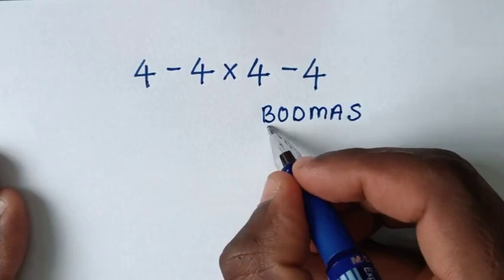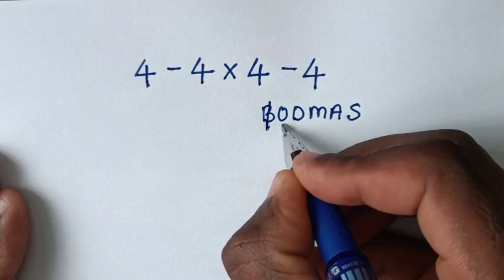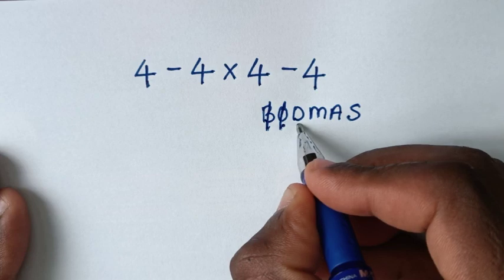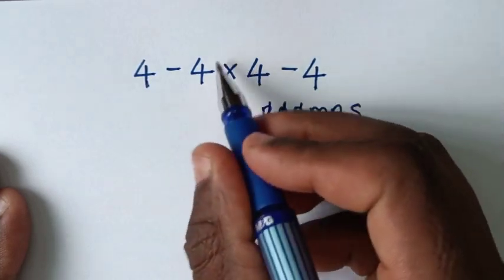B is bracket. In this problem we don't have bracket or order or exponent. We don't have order or exponent. D is division. We don't have division. M is multiplication. We have this multiplication here.